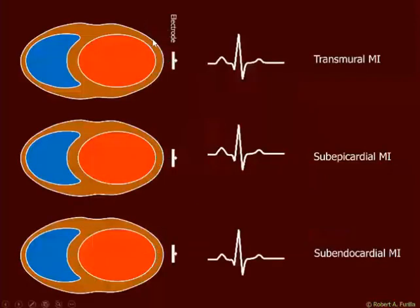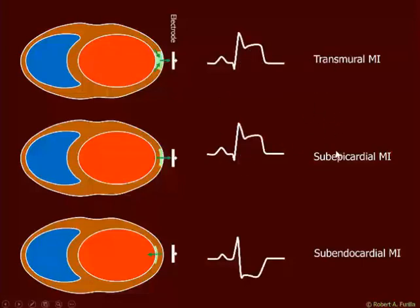In this example, current is flowing from the healthy sites to the injured site and being picked up by the electrode. In a sub-epicardial MI, flow is going from the healthy sites to the injured sites and being picked up. In a sub-endocardial MI, flow is also moving from healthy myocytes to injured myocytes, but it's moving away from the electrodes. So in a transmural or sub-epicardial MI we would see ST elevation, but in a sub-endocardial MI we would see ST depression.